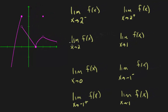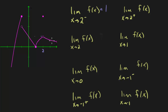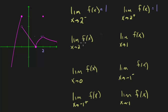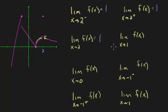On to the next example. We have another piecewise graph with left-hand limits, right-hand limits, and general limits mixed in. When you don't see a direction sign — a plus or minus — it's a general limit. Approaching 2 from the left, the y-value looks like 1. Approaching 2 from the right, it also looks like 1. So the general limit as x approaches 2 is also 1.